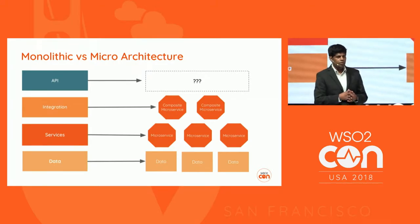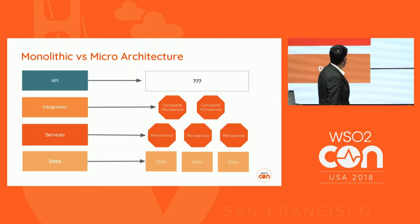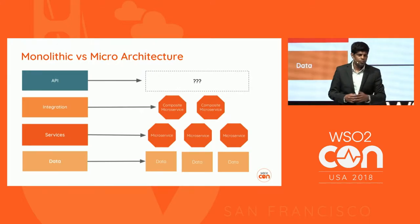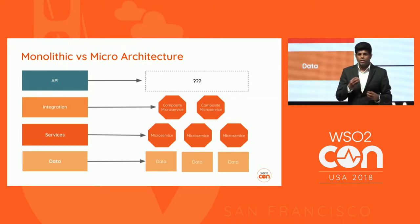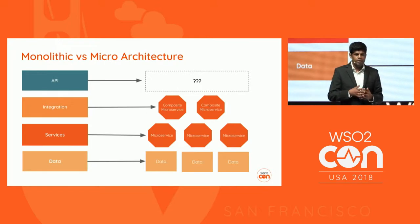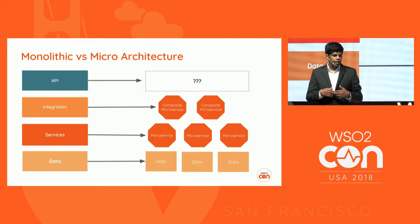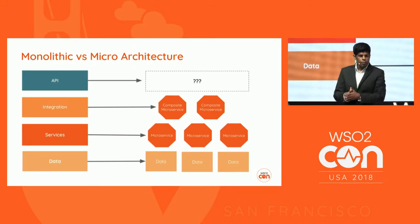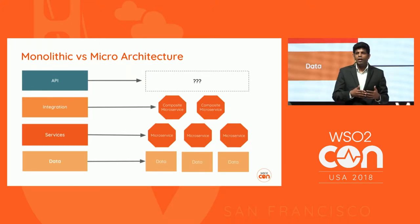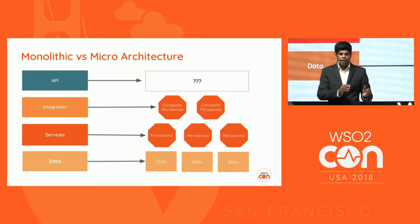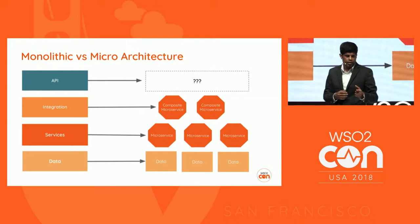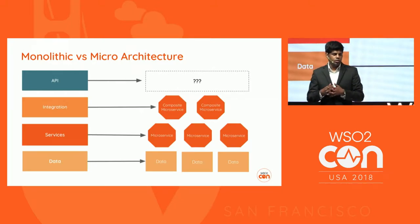Let's do a small thought experiment. If you have a monolithic architecture, we will try to convert this layered monolithic architecture into microservice architecture. The easiest way is to start from services — break down the services into the smallest independent unit and convert into microservices. They should be lightweight, single-purpose services. Each microservice should have its own database so that you can independently develop and deploy them. Integration logic should also be broken into corresponding microservices — for example, a service orchestration logic becomes a separate microservice.